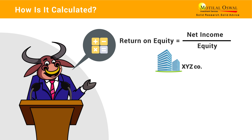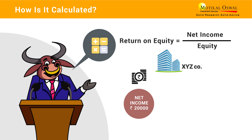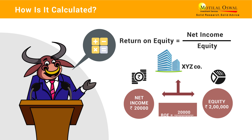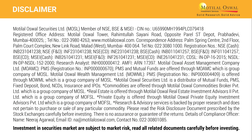For example, Company XYZ has a net income of 20,000 rupees and a total equity of 2 lakh rupees. The ROE in this case would be 10 percent. That's it for return on equity.